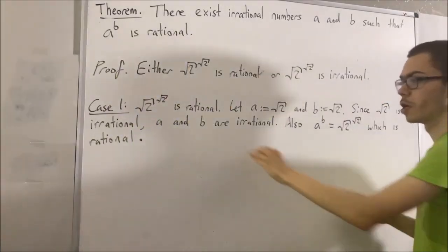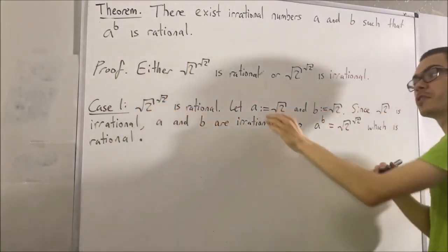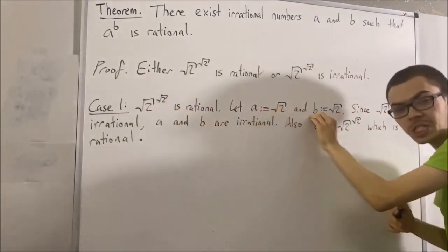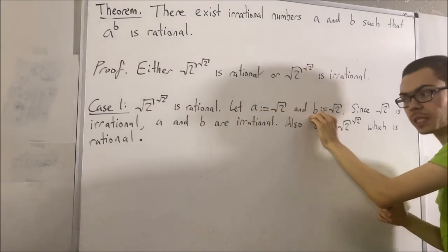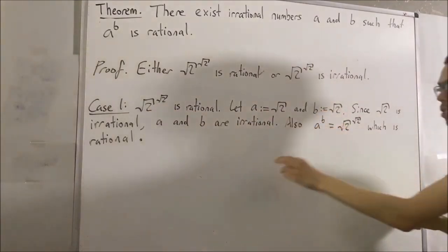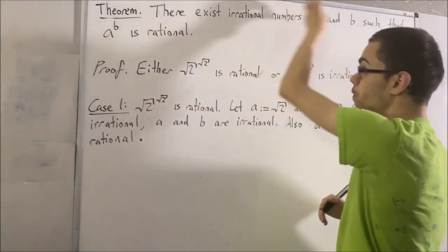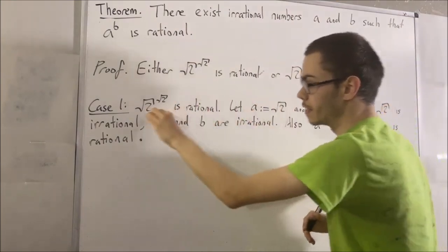So under this scenario, we have found two irrational numbers, a and b, such that a to the power of b is rational. So we have proven the theorem in this case.